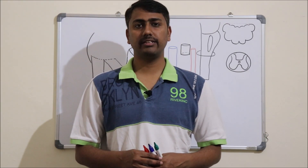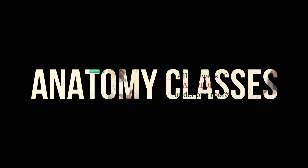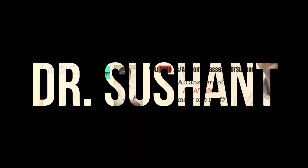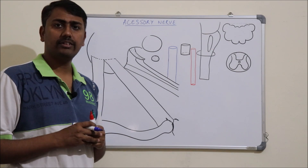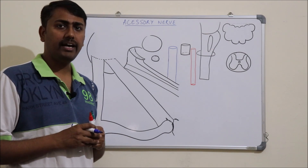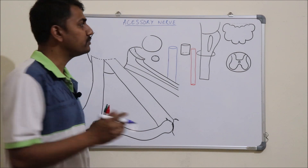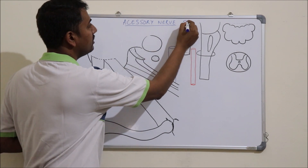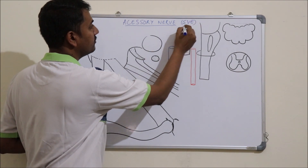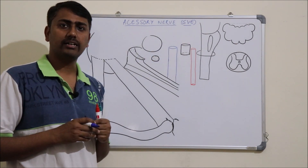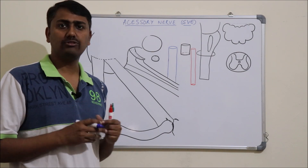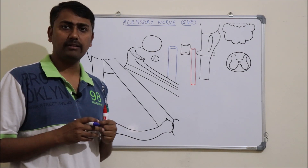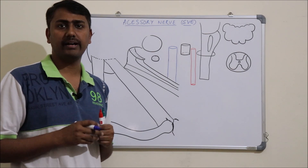The topic of today's lecture is the accessory nerve. The accessory nerve is a purely motor nerve and its nucleus belongs to the special visceral efferent column. It consists of a cranial part which arises from the medulla oblongata and is accessory to the vagus nerve, and a spinal part which arises from the upper five cervical spinal segments.